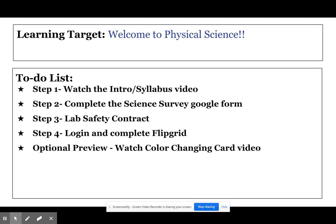Step one is to watch this video. Step two, you're going to complete a science survey Google form. Step three, you're going to complete a lab safety contract. Step four, you're going to log in and do a Flipgrid video, and there are directions with that as well as the link to get into Flipgrid. There's also an optional preview to watch a color changing card video that we'll talk about a little bit tomorrow. It's optional, but if you'd like to take a look at it, just know that it is there for you.